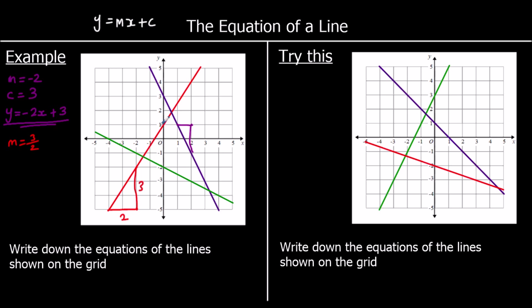Its y-intercept is at one. So it's got a gradient of three over two — for every one it goes across, it goes up by one and a half. And it crosses the y-axis at one. So y equals three over two x plus one.